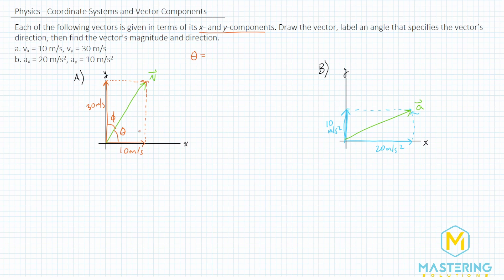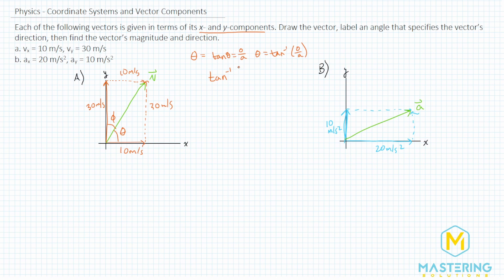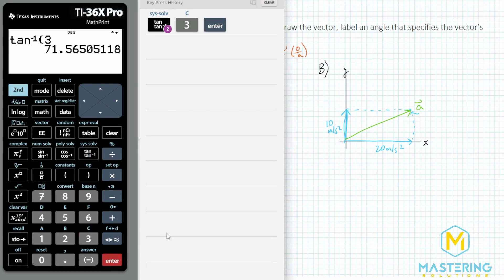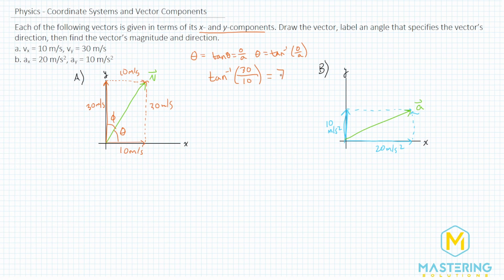For theta, we'll use tangent because we have both the opposite and the adjacent given in meters per second. Tangent of theta equals opposite over adjacent, so we isolate theta by taking the inverse tangent of both sides. Theta equals inverse tangent of opposite over adjacent — that's inverse tangent of 30 over 10, which is inverse tangent of 3, giving us 72 degrees for theta.